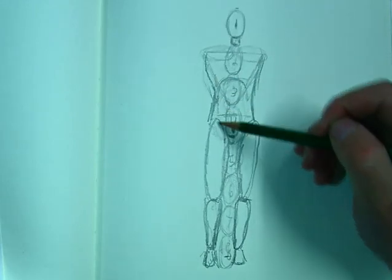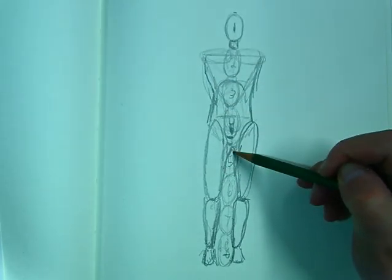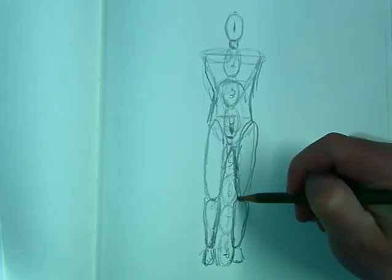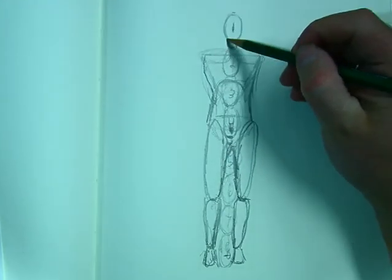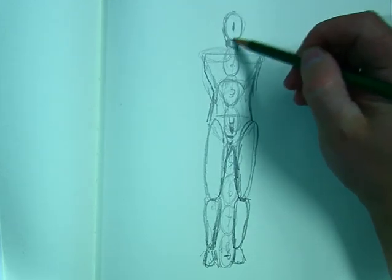And we'll fill out our torso. So this is called drawing through, and you can draw the mechanical lines. You don't need to erase. You're just figuring out where things go.